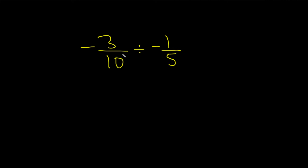Negative 3 over 10 divided by negative 1 over 5. The first step in this problem is to change the division to a multiplication problem. Division is the same thing as multiplication by the reciprocal.